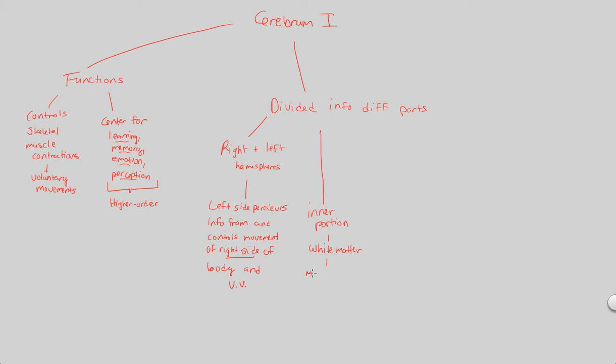Therefore, that white matter will be myelinated. And it makes sense to myelinate the inside of the cerebrum because that's where we're going to have learning, memory, emotion, perception, voluntary movements. All of this is going to happen here, so you want it to happen efficiently and correctly and swiftly. And it makes sense to myelinate that portion of the brain then.